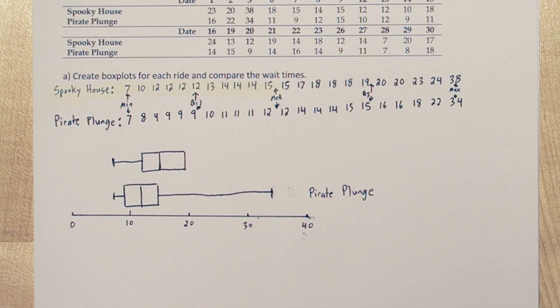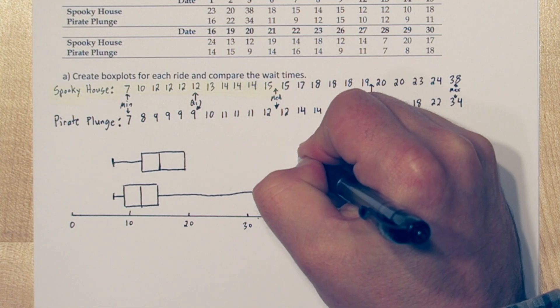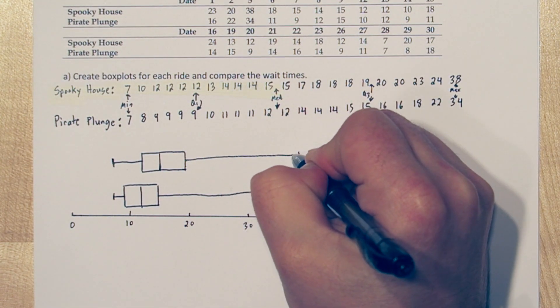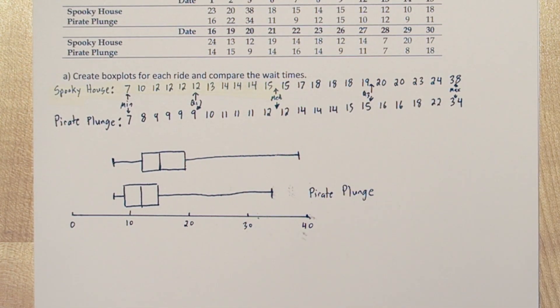The minimum waiting time is again 7, and the maximum waiting time is 38. Now these are box plots, but what we're going to draw is actually modified box plots. To make those, we're going to check for outliers and modify these box plots if necessary.